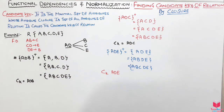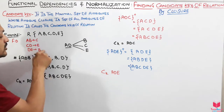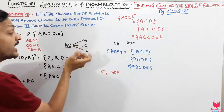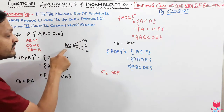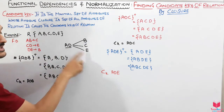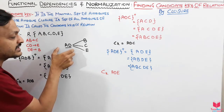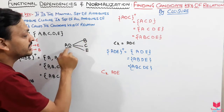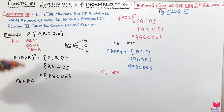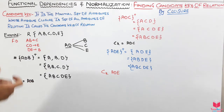This is how we find the candidate keys of a relation by finding the closure of minimal sets of attributes. Arrange all functional dependencies, collect all left-hand side attributes, identify the remaining attributes, and combine them. Then compute closures: if you get all attributes, it is a candidate key; otherwise it is not.